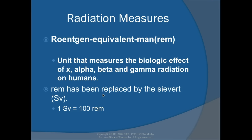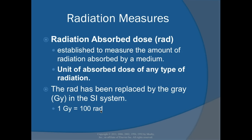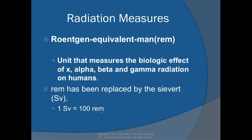The roentgen equivalent man (REM) measures the biological effect of x-ray, alpha, beta, and gamma radiation in humans. All our dose badges are measured in REM — this is the unit that measures biological effects. The REM has been replaced by the sievert in SI units. One sievert equals 100 REM, the same 1-to-100 conversion as with the RAD and gray.